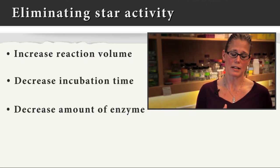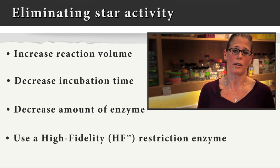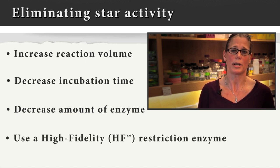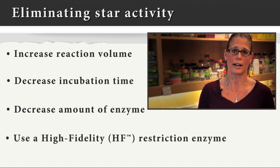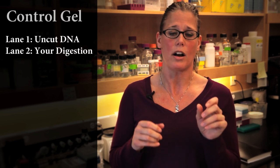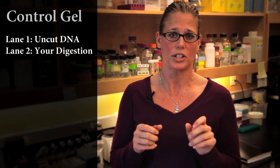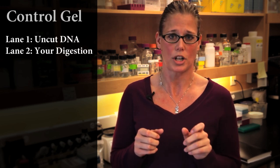You can also decrease the amount of enzyme you're using, or you could try one of our high-fidelity restriction enzymes, which have been engineered to virtually eliminate star activity. If you don't know whether you have partial digestion or star activity, we recommend running your uncut DNA alongside your digestion in the agarose gel.